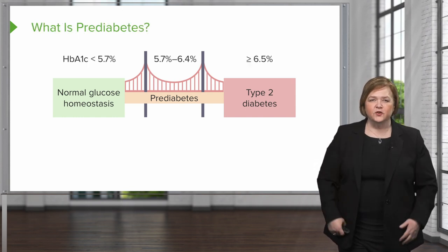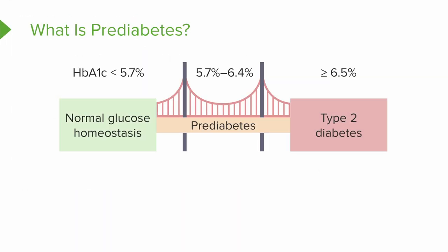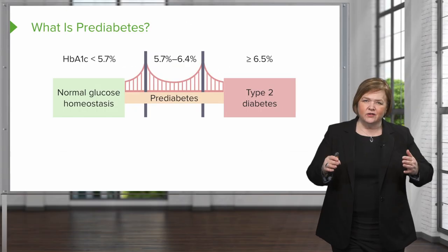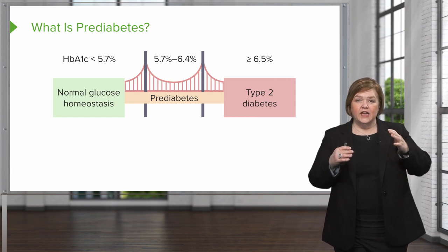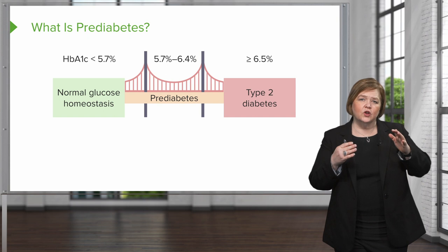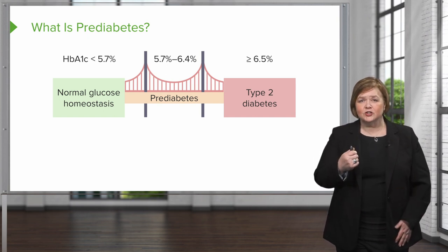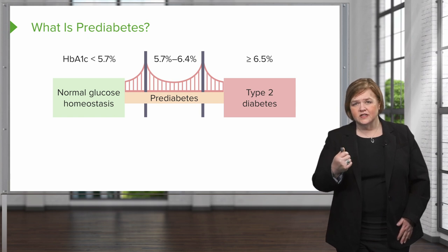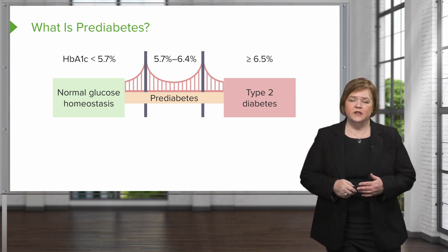Look at the numbers on the screen. Normal glucose is less than 5.7% — these values refer to hemoglobin A1c, which gives us an idea of what the average blood sugar was for this patient over the last two to three months. Normal is less than 5.7%. Pre-diabetes is 5.7% up to 6.4%. Type 2 diabetes diagnosis is greater than or equal to 6.5%. So if your patient is around 5.8%, they're at the lower end of pre-diabetes, but if their hemoglobin A1c is bumping up against 6.3 or 6.4, they are much closer to developing type 2 diabetes.